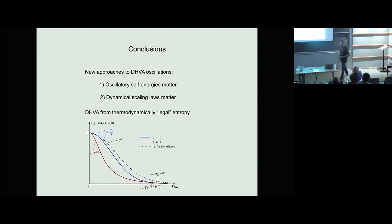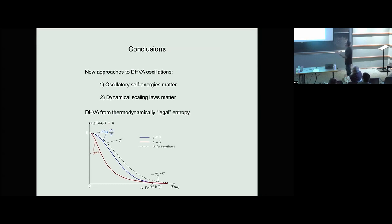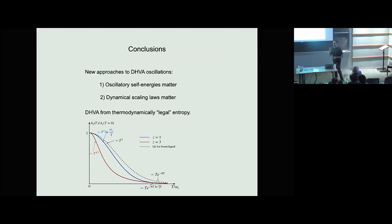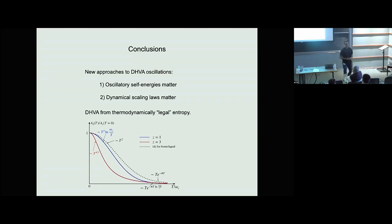To summarize: we've shown a way of studying quantum oscillations pioneered by Luttinger and others — the standard approach for over 60 years — works well for 99% of problems but breaks down at quantum criticality. We obtain new approaches to de Haas van Alphen oscillations, and learned that Luttinger's assumption that you can ignore the oscillating part of the self-energies matters at the quantum critical point because of non-analytic frequency dependence. Dynamical scaling laws matter, and we obtained the magnetization from a thermodynamically legal form of the entropy.